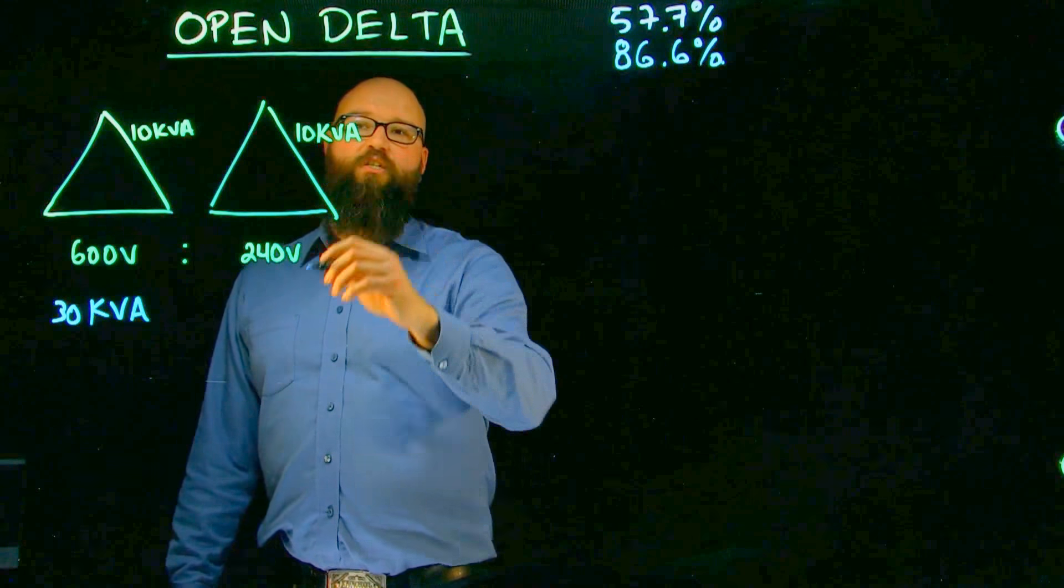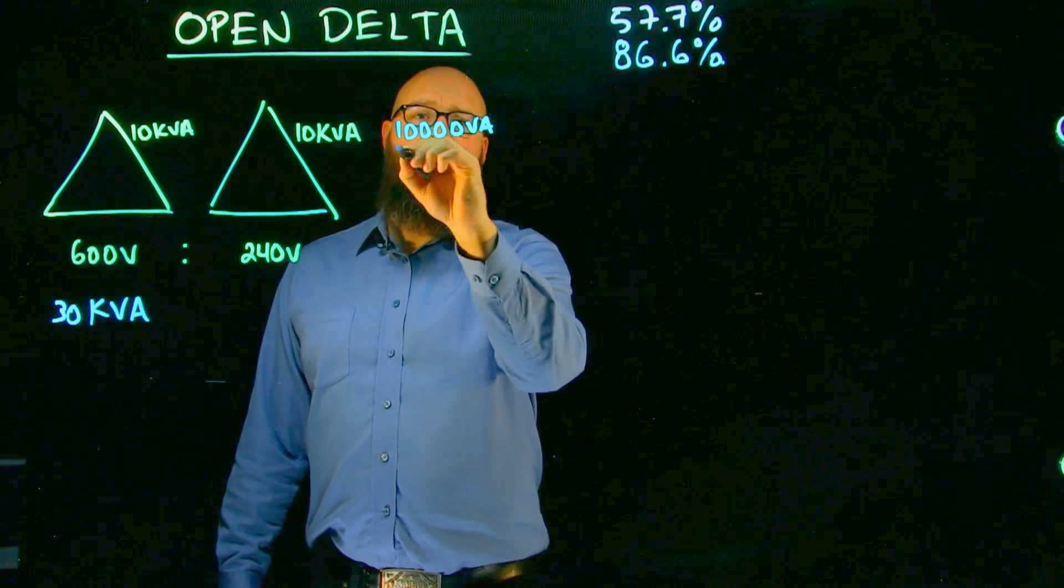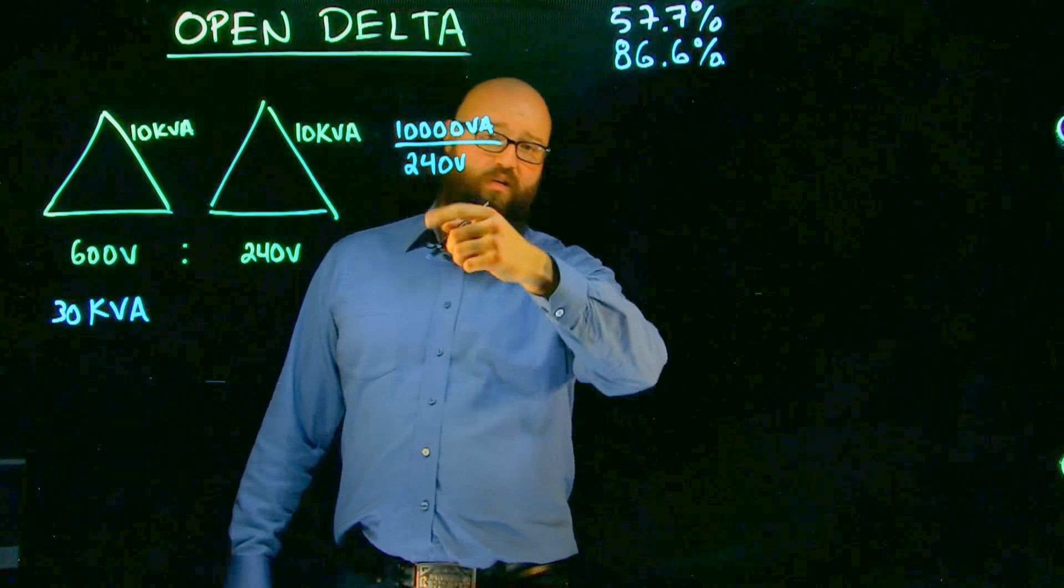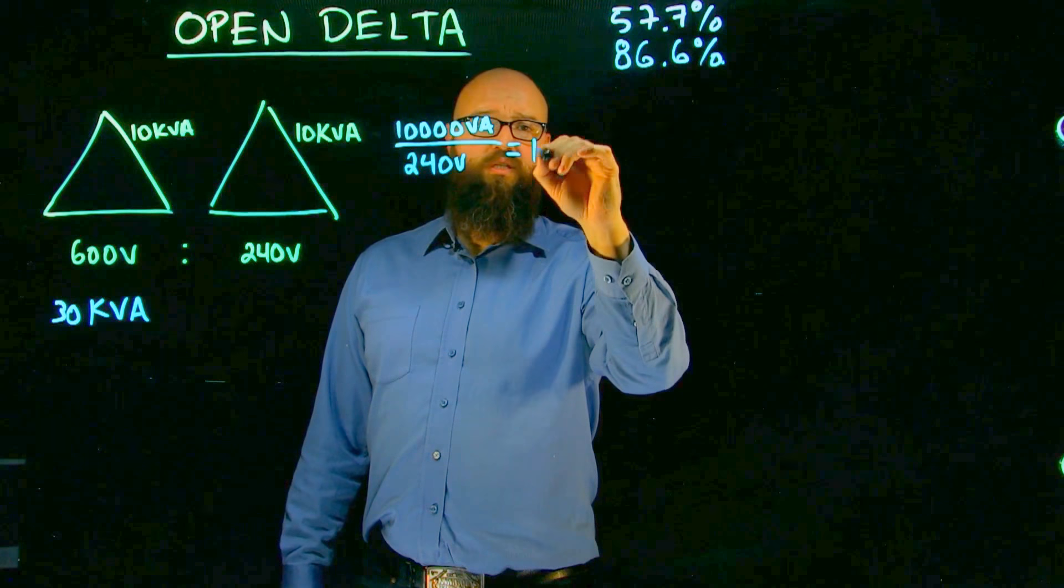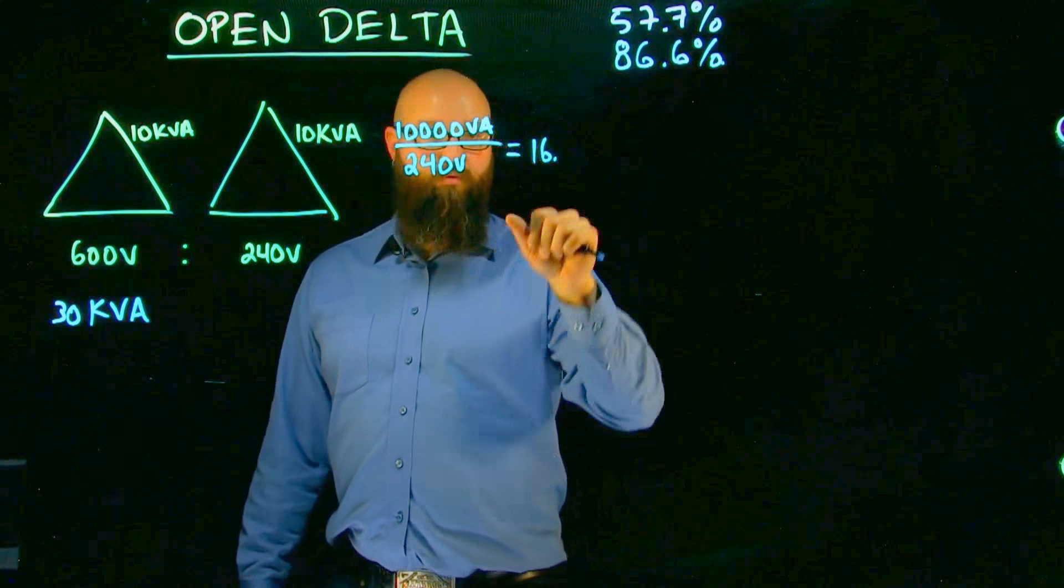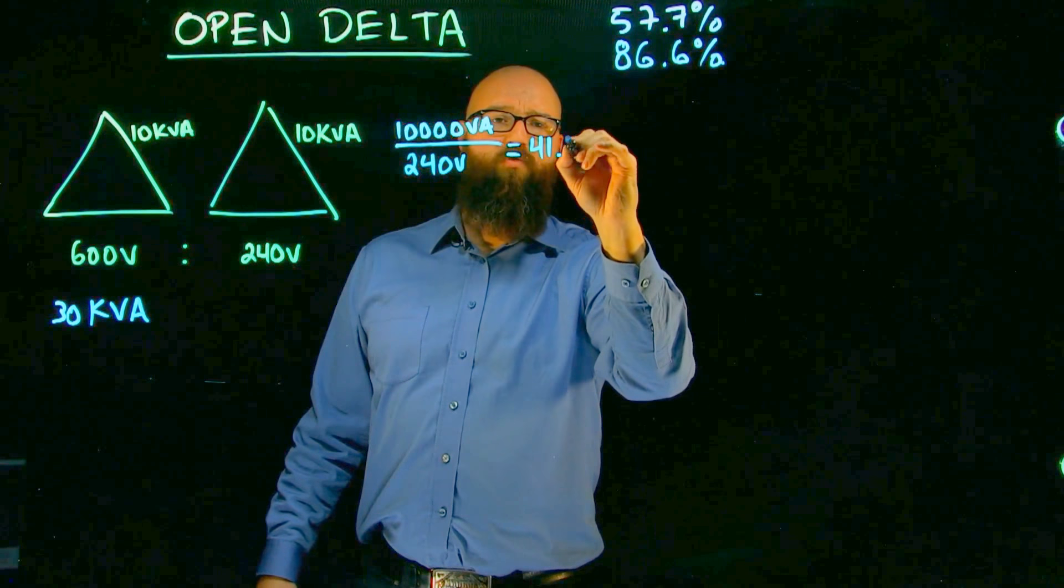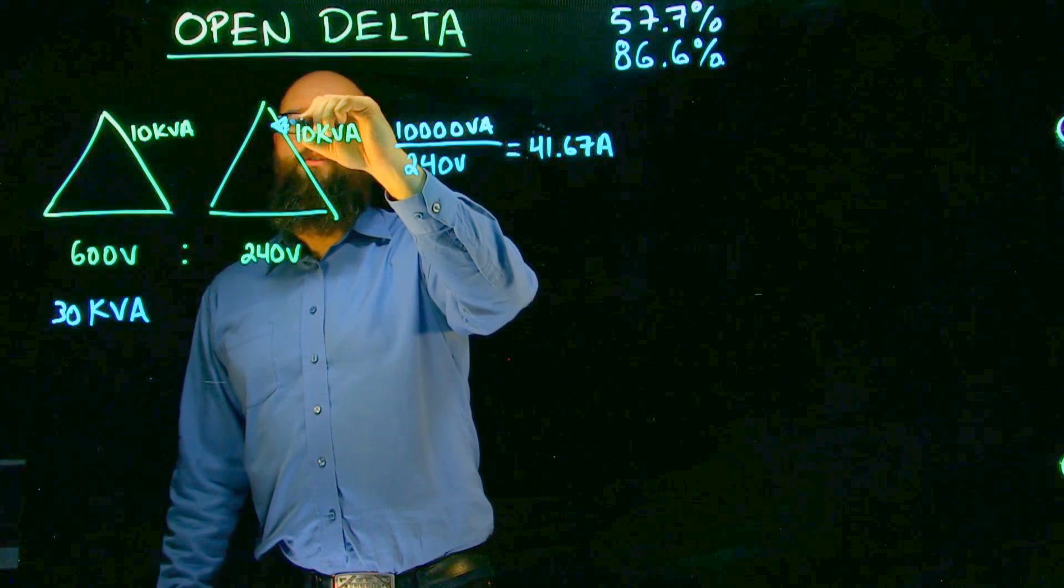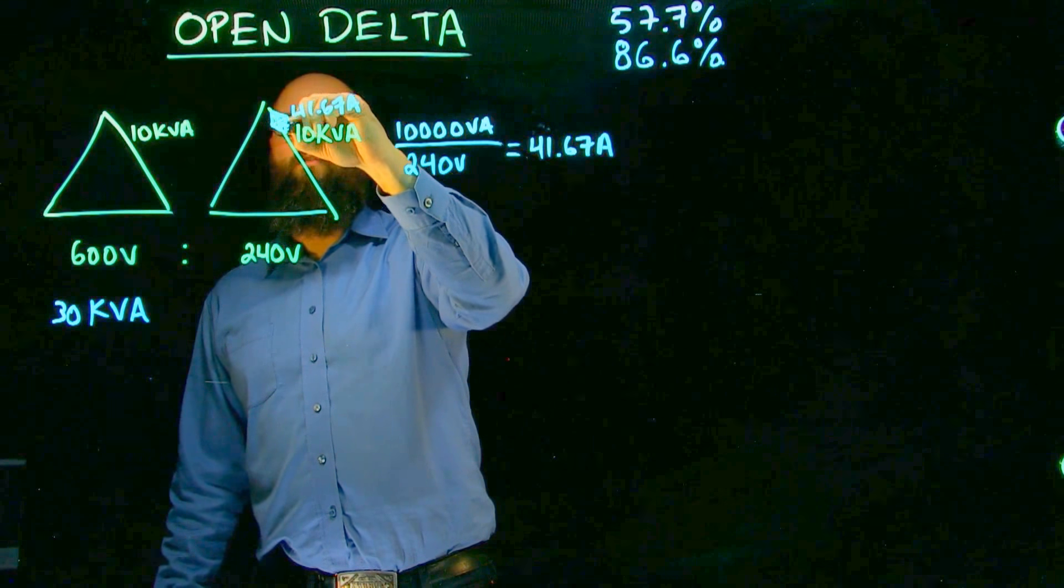So if we look at each individual phase, we have 10,000 VA divided by our phase voltage of 240 volts which gives us, we should see 16, no that's our primary. We don't worry about our primary right now. We're going to look at about 41.67 amps phase current. There's 41.67 amps. Let's draw that going the other way.